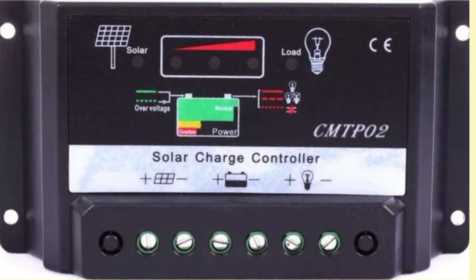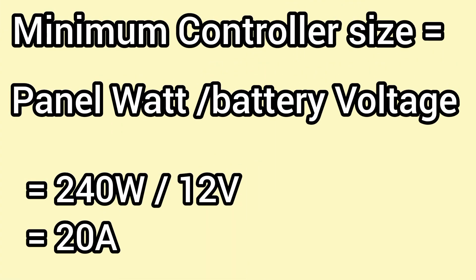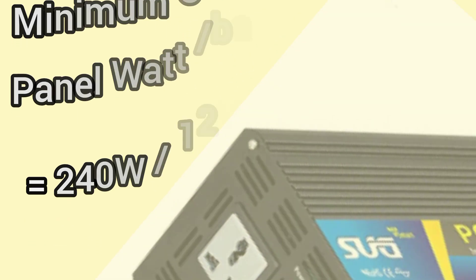The next thing to consider is the charge controller. To get the size we need, we divide the wattage rating of the solar array by the battery voltage. The solar array is 240 watts, divided by 12 volts, giving us 20 amps. A 20-amp charge controller should be able to charge our battery within five hours.